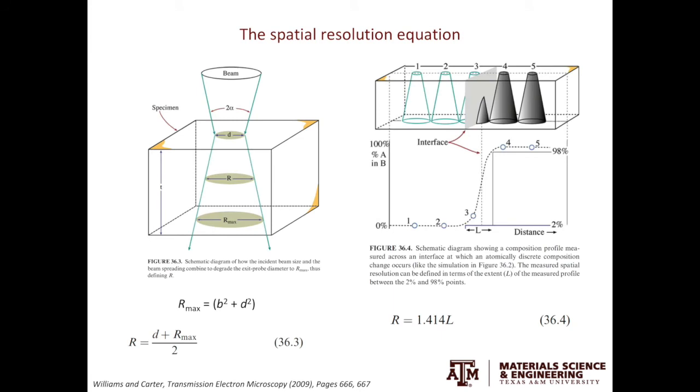In the previous slide, we discussed how we can quantify the beam spreading. But how can we link the beam spreading to the resolution of EDS in TEM? On the left of the slide shows you a pictorial view. As T, the sample thickness increases, the beam spreads more and more, giving you a cone-shaped interaction volume.